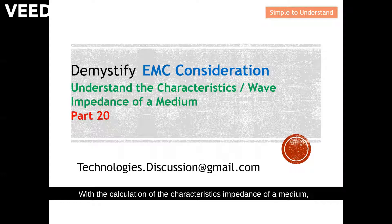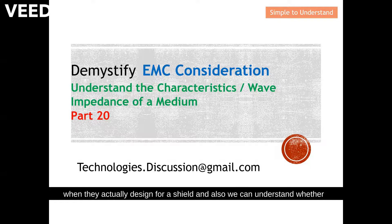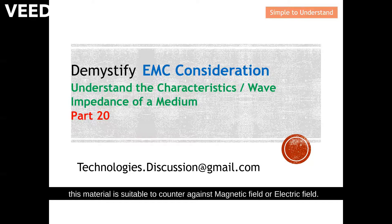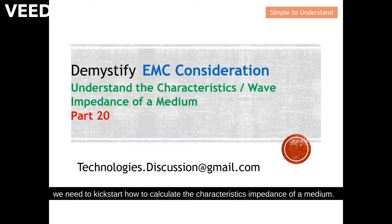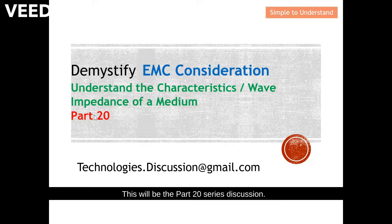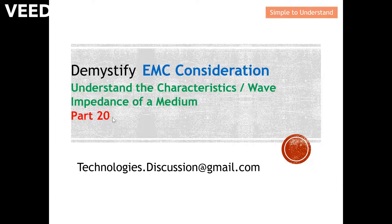With the calculation of the characteristic impedance of a medium, we can decide how thick a material is supposed to be when designing a shield, and also understand whether the material is suitable to counter against magnetic field or electric field. Hence, before we can discuss shielding, we need to kick-start with calculating the characteristic impedance of a medium. This will be Part 20 of our series discussion.